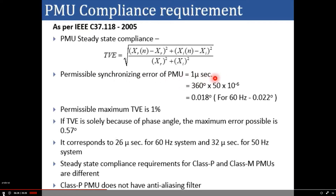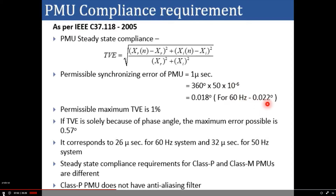The permissible synchronizing error in PMU is 1 microsecond — that is, the PMU clock synchronized with a 1 PPS signal has a maximum delay of 1 microsecond. Translating this to an angle value: 360° × 50 × 10^-6 = 0.018° for a 50 Hz system. Replacing 50 by 60 Hz gives a maximum synchronizing error of 0.022°.